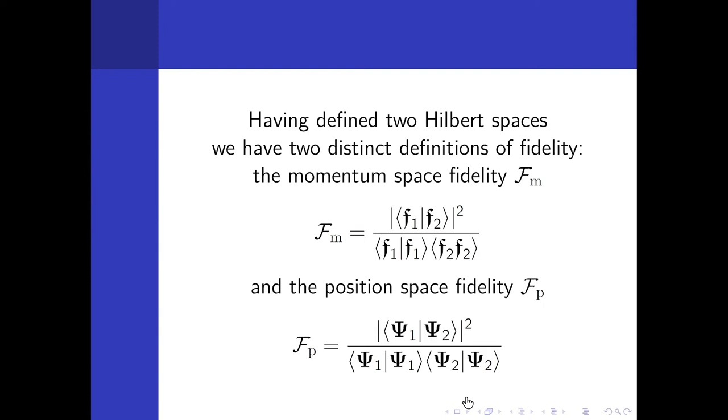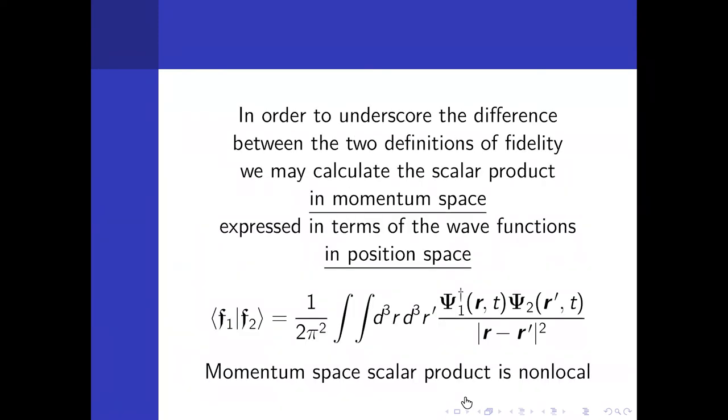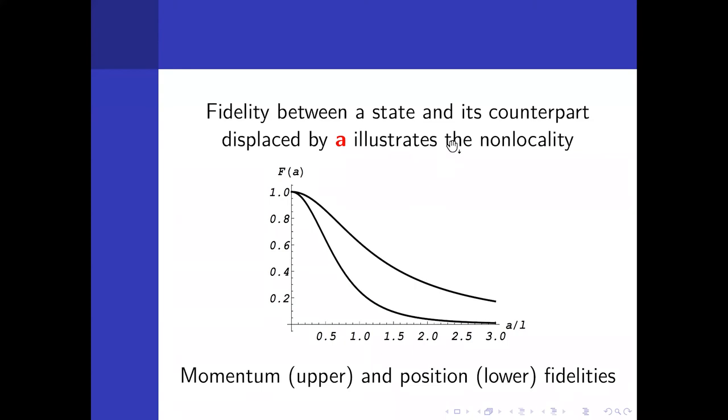For non-relativistic particles, these fidelities are equal. For photons, they are not equal. They're related in a rather complicated way. I calculated the scalar product in terms of F functions, and then I translated this in terms of psi. The right hand side is rather peculiar because it is non-local. So there is some deep problem here with locality. Momentum space fidelity implies non-locality in position space.